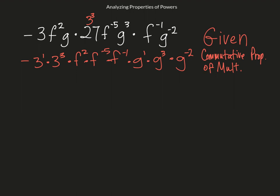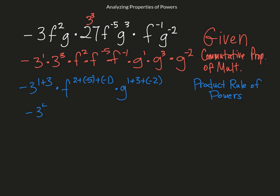Now I'm going to add the exponents of every power that has the same base. So negative 3 to the 1 plus 3, times f to the 2 plus negative 5 plus negative 1, times g to the 1 plus 3 plus negative 2. And that is our product rule of powers. When I simplify that: negative 3 to the fourth, f to the negative 4, g squared.